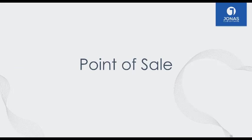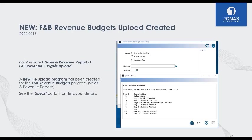Moving over to Point of Sale — lots of great new features here. The first one involves the food and beverage revenue analysis reports in our reporting tools. Some of those reports include budgets for covers, beverage revenue, and food revenue. If you have a detailed budget, you can now upload your budget into the system, which should be faster than manually entering all those covers and beverage budgets. As long as you can get your budgets into Excel, you just upload that right into the program.